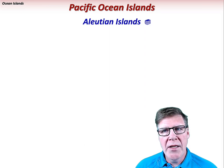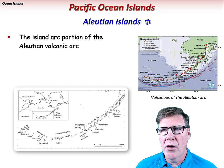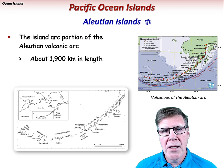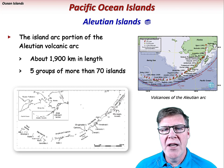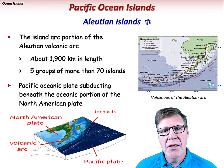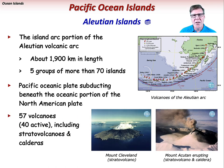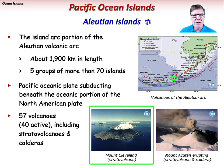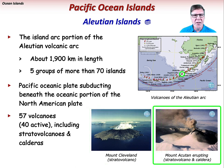Let's now look at some notable ocean islands, starting in the Pacific Ocean. The Aleutian Islands form the island arc portion of the Aleutian Volcanic Arc, about 1,900 kilometers in length, composed of five groups of more than 70 islands. The Aleutian Island arc is formed as the Pacific Oceanic Plate subducts beneath the oceanic portion of the North American Plate. There are 57 volcanoes in the Aleutian Islands, 40 of which are active stratovolcanoes and calderas, including the highly active Mount Cleveland and Mount Akatan.